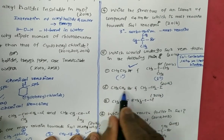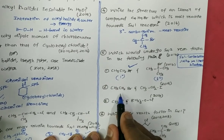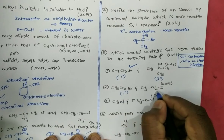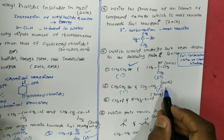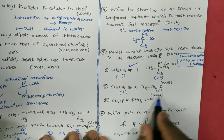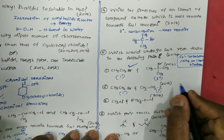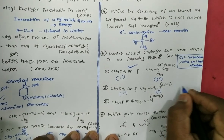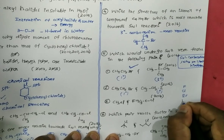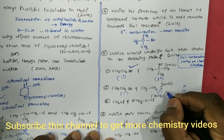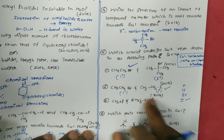In the second category of this question — asked in 2015 — both compounds are 1° alkyl halides, so degree alone cannot decide. In this case we look at the leaving group. Among fluorine, chlorine, bromine, and iodine, iodine is the better leaving group, so the iodo compound undergoes SN2 reaction faster.